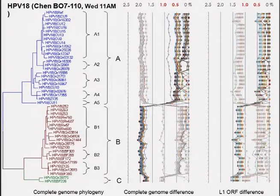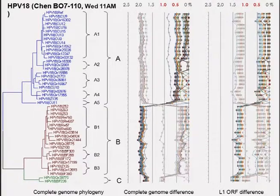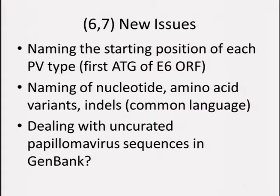There will be a talk on Wednesday morning regarding HPV-18. We're moving towards an alphanumeric nomenclature for variants, where the A variant lineage or A1 sub-lineage always includes the reference sequence. Among the new issues: we need to name the starting position of each reference sequence, which is important for describing variants — nucleotide, amino acid variants, and indels. A paper coming out from the papillomavirus group later this year or early next year will describe a common-language system for usage, similar to what is used in the human genome.